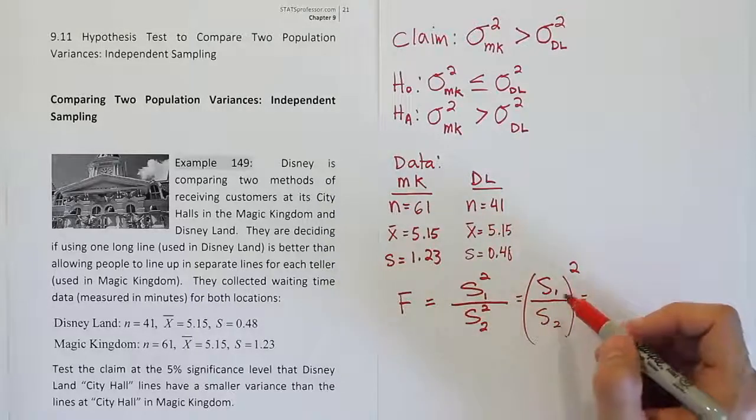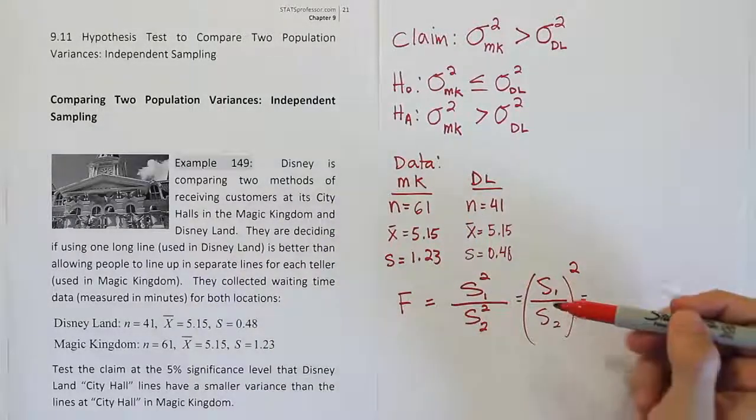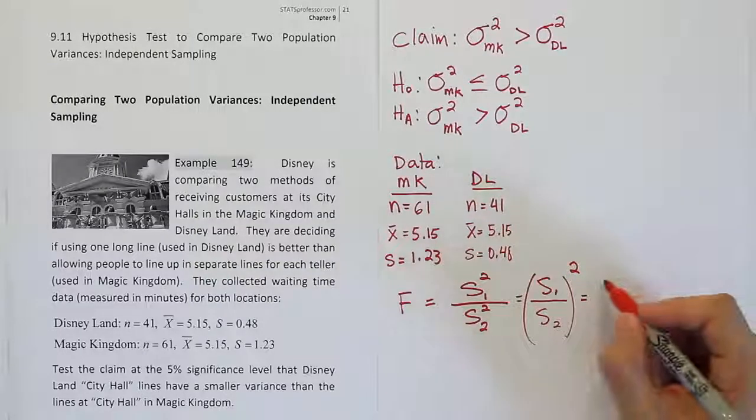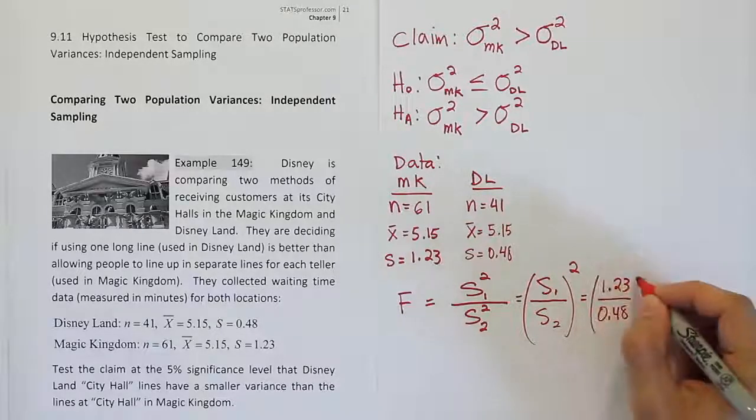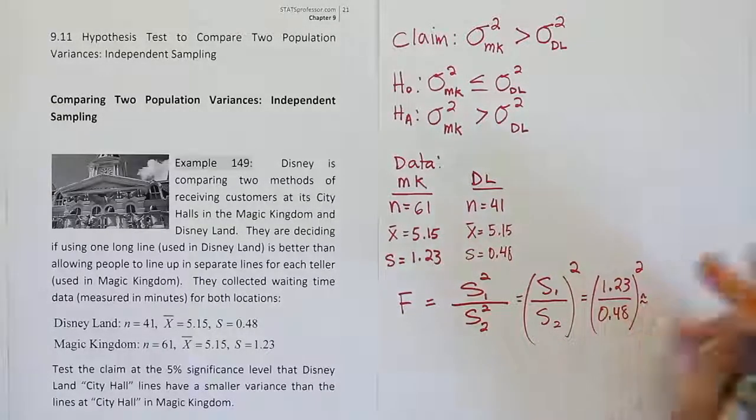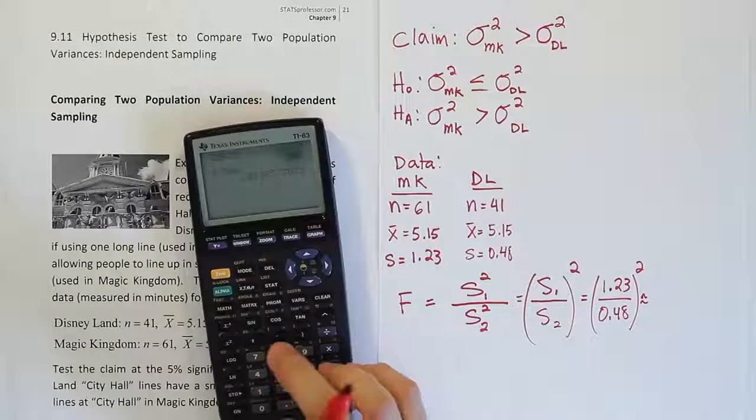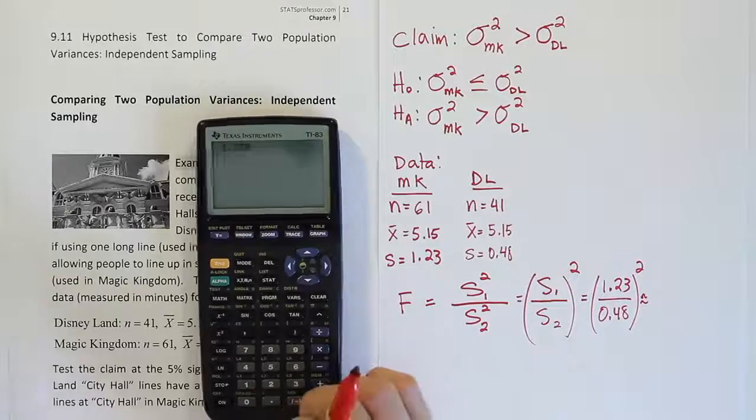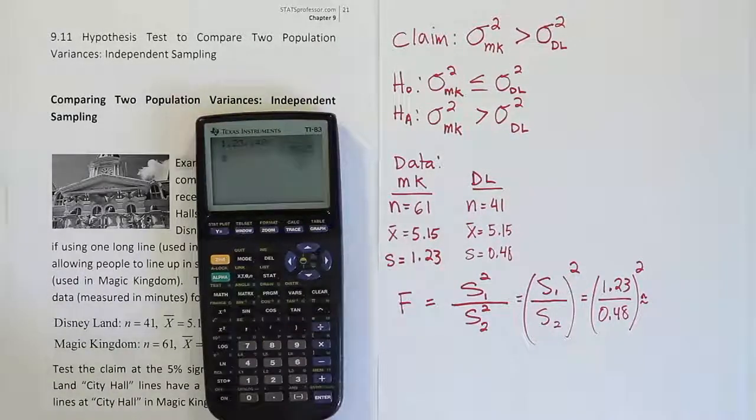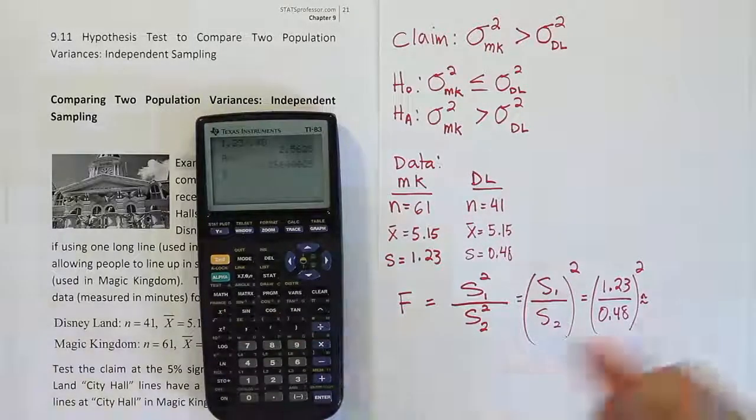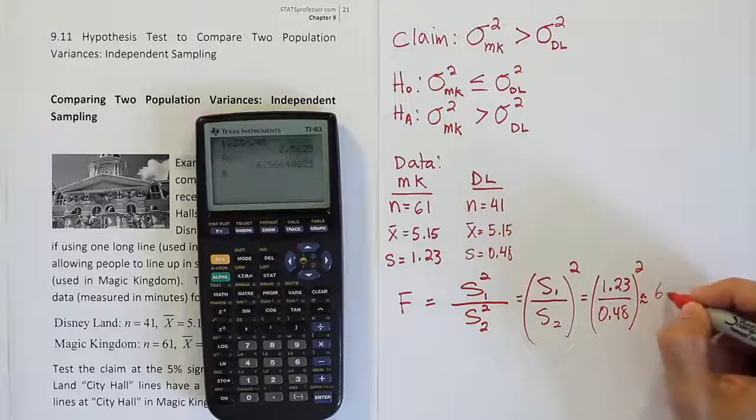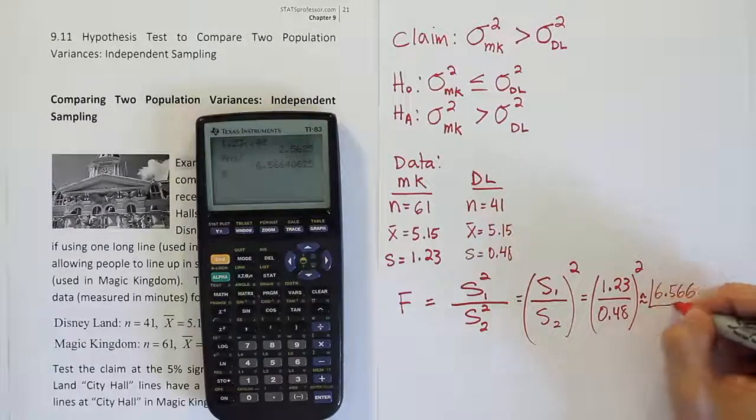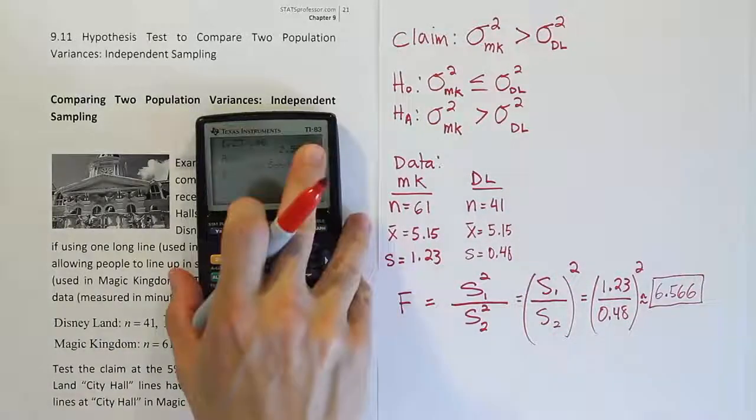In our case, this one and two is Magic Kingdom and Disneyland. The top one, the bigger one, is going to be Magic Kingdom. So 1.23 divided by 0.48, and then we will square the result. Let's see what that gives us. I get 1.23 divided by 0.48, and when I do that, I get 2.56. But then I'm going to square the answer, so I square it and I get 6.566 if we round to three places. That's our F test stat.